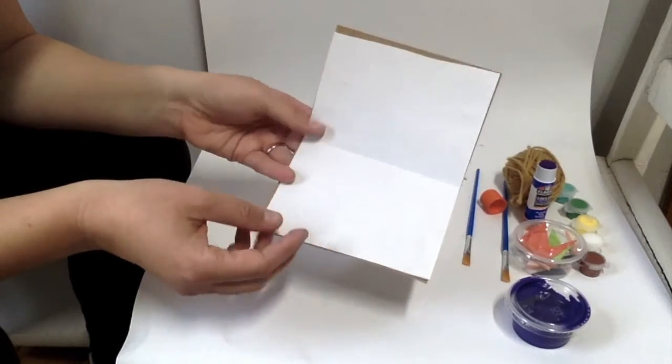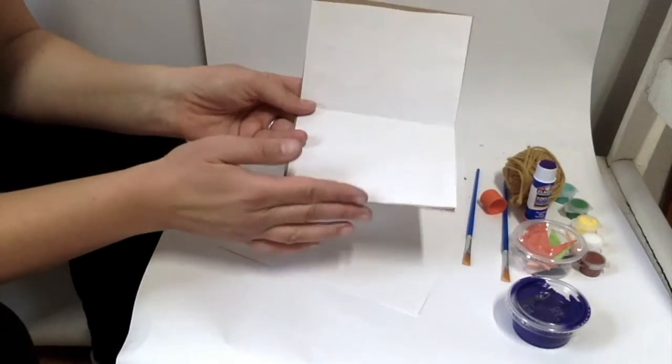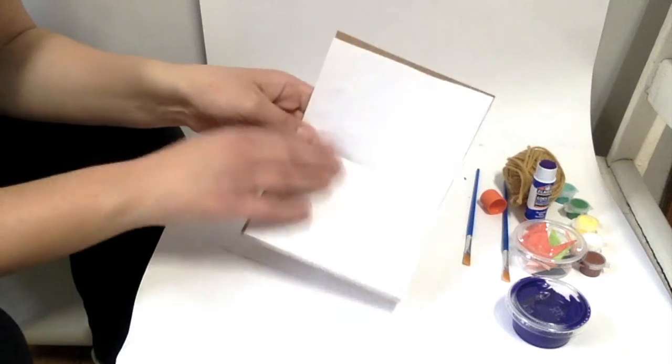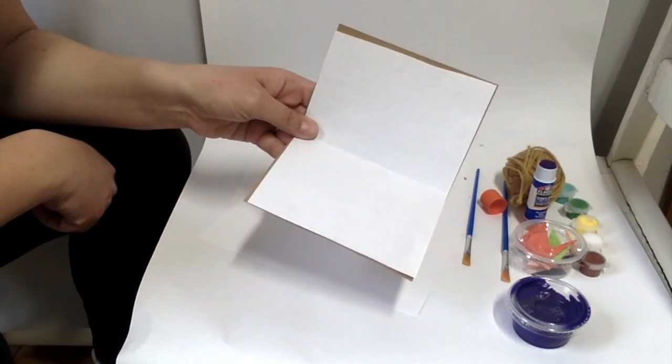What I did is I took the white paper and I cut it just a little bit so it would fit inside this card. Then I used the glue stick to glue it down.